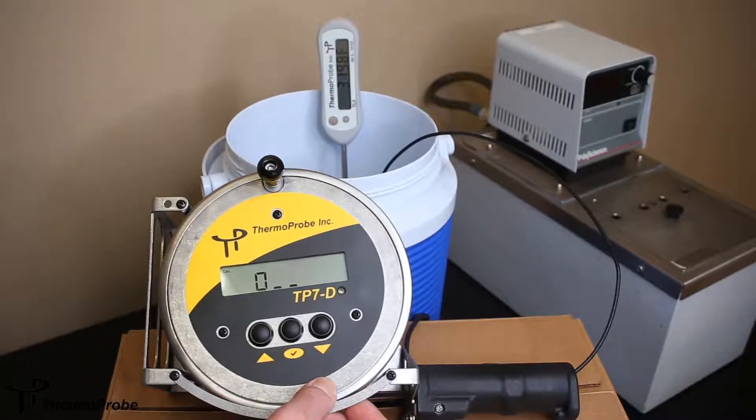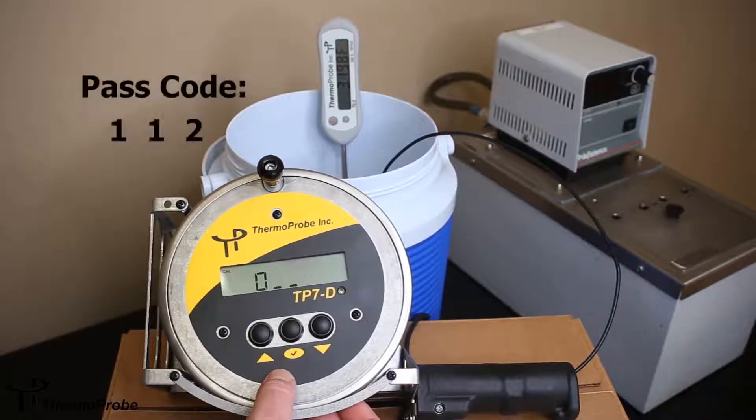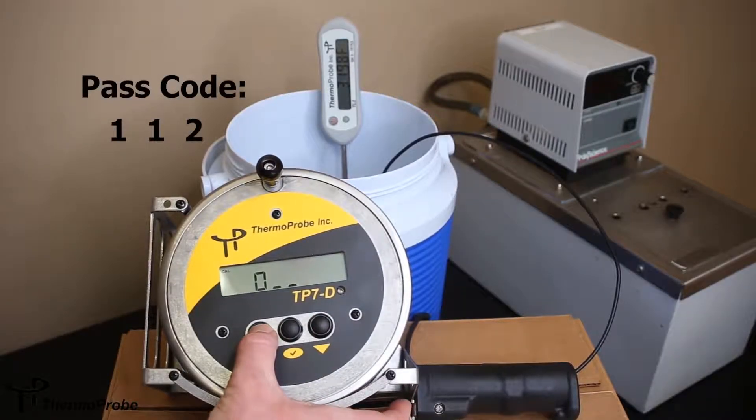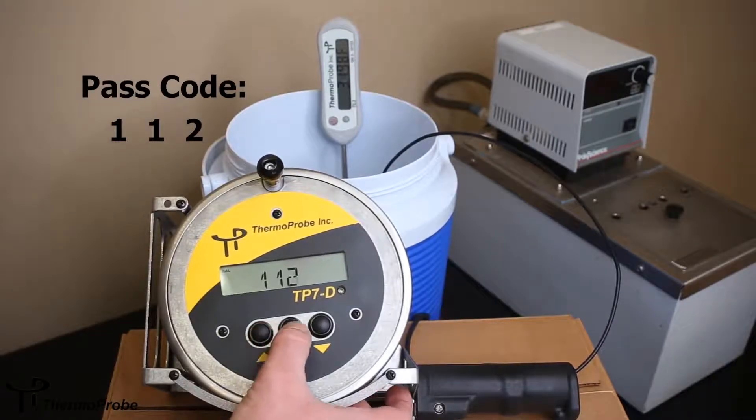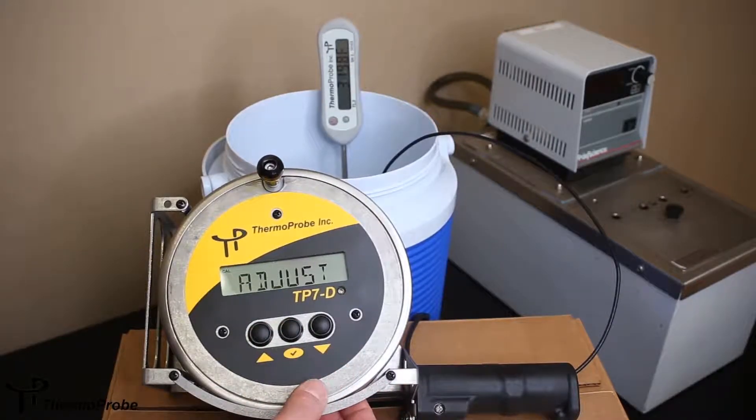To get into calibration, it requires a three-digit password to ensure it's not changed by accident. The password is 112. You use your up and down arrows to increment: one, one, two. That gets me into calibration mode.